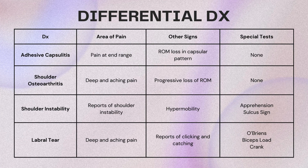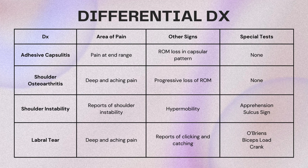Reviewing a differential diagnosis chart: Adhesive capsulitis starts with pain in range, then pain all around, with range of motion loss in the capsular pattern — no special tests. Shoulder OA presents with deep aching pain and progressive loss of range of motion. Shoulder instability involves reported instability and hypermobility, with apprehension and sulcus sign as special tests. Labral tear also has deep aching pain similar to shoulder OA, but with clicking and catching, and special tests including O'Brien's, biceps load, and crank.